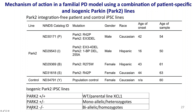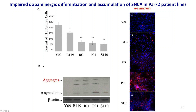The isogenic controls consist of wild-type cells, monoallelic knockout, and biallelic knockout. We also have a monoallelic control since it is a dominant disease in some cases. What we saw was a phenotype: decreased dopaminergic differentiation in all four patient lines compared to the age-matched control, and aggregation of alpha-synuclein in all patient lines much more significantly than controls, verified by western blot and immunostaining.